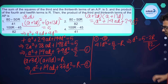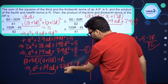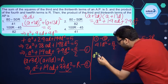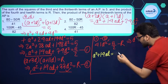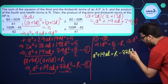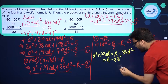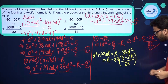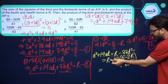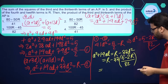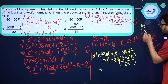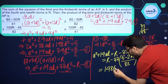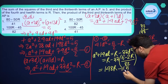So D² = (5 − 2R) / 82. Substituting this into Equation 2 to find A² + 14AD: A² + 14AD = R − 33D² = R − 33 × (5 − 2R)/82. Simplifying: this gives (82R − 165 + 66R) / 82 = (148R − 165) / 82.